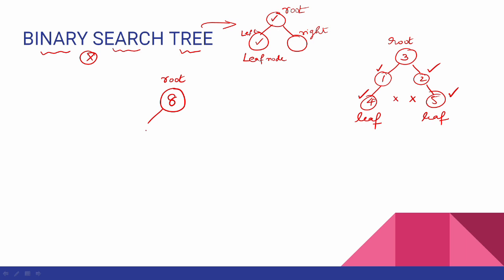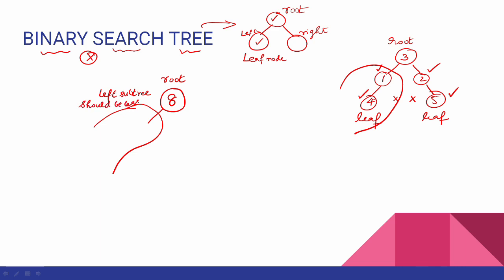The left subtree is on the left side. The left subtree should be less than the root. So suppose 3 is in the left subtree — it is less than the root. Now the right subtree is on the right side and is greater than the root.